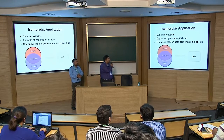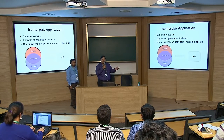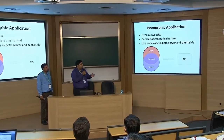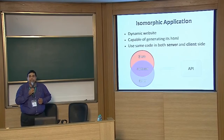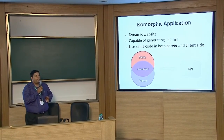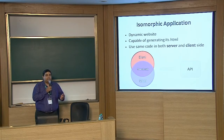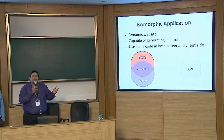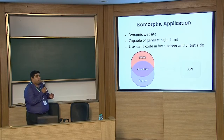So what exactly is an isomorphic application? In literal sense, an isomorphic application is a dynamic, JavaScript-based website where everything is absolutely dynamic. It has the capability to generate its HTML using a concept known as virtual DOM. Virtual DOM is a way where you can re-render the HTML based on dynamic content. That's the whole idea of virtual DOM, and it's a key capability of an isomorphic application.